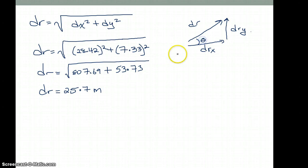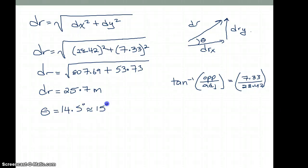Now, of course, we've got to figure out my direction. So this is my theta. To figure out my direction, I'm going to have tan inverse opposite over adjacent, which is going to be my y component 7.33 over 28.42. And your theta will come out to 14.5 degrees, or 15 degrees, north of east.